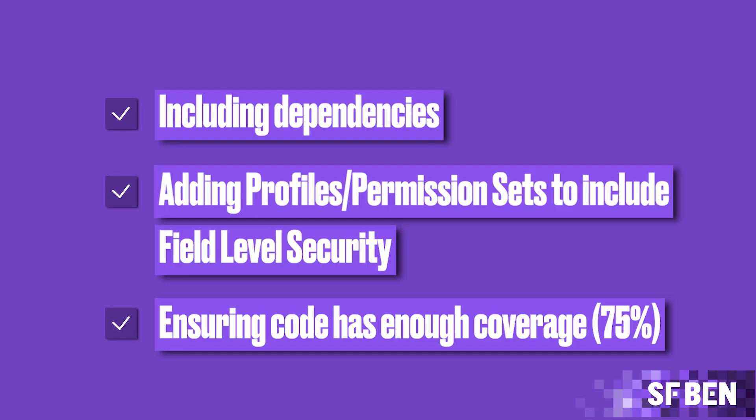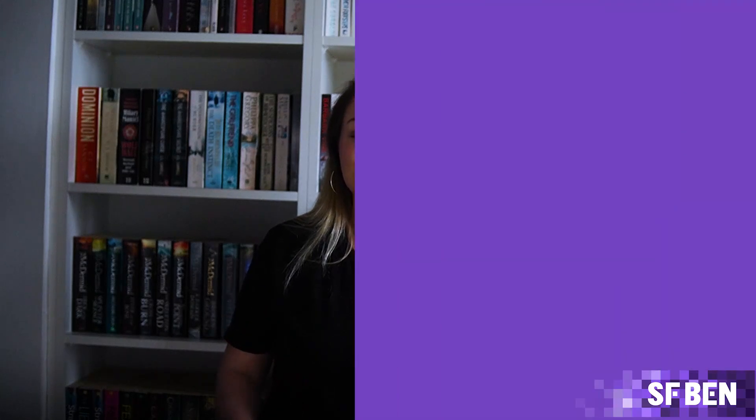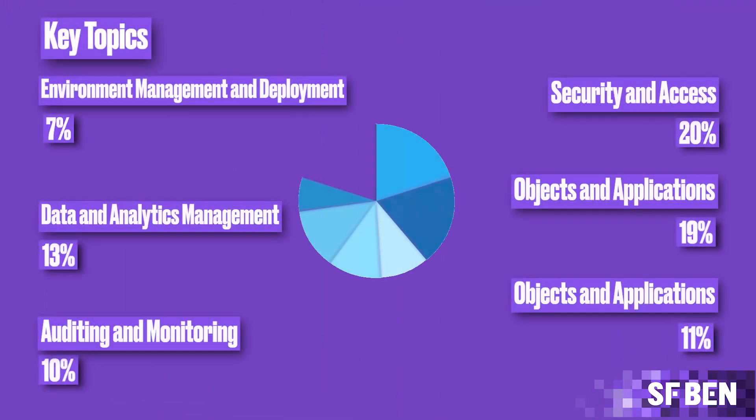75% code coverage is required. Additionally, you will also need to be aware of other options for moving metadata, such as Visual Studio Code. And finally, we have Process Automation, making up another huge 20% of the exam.